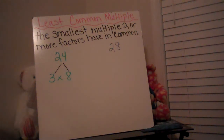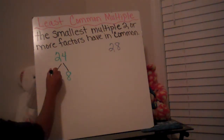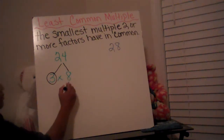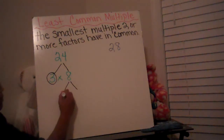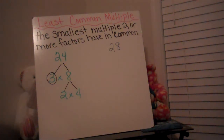Between the 3 and the 8, I have to decide which one is prime and which one is composite. 3 is prime, so I'm just going to circle it. 8 is composite because 8 can be made using 2 and 4, not just 1 and 8. So I'm going to break down the 8 and use 2 times 4 to make 8. From here, I decide if the factors are prime or composite — meaning if they need to be circled or decomposed further.